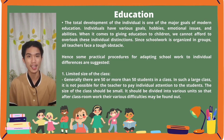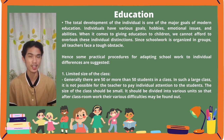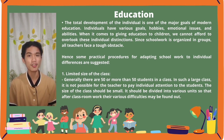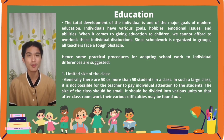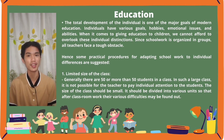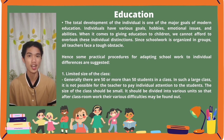Since schoolwork is organized in groups, all teachers face this challenge. Some practical procedures for adapting schoolwork to individual differences are suggested. First is limiting the size of a class. Generally, there are 50 or more students in a class, making it impossible for teachers to pay mutual attention to all students. The class size should be small and divided into various units so that teachers can address the needs of children regarding subjects they find difficult.